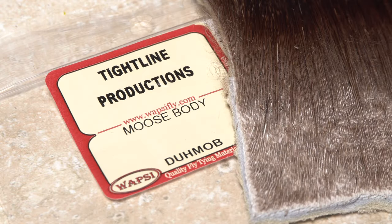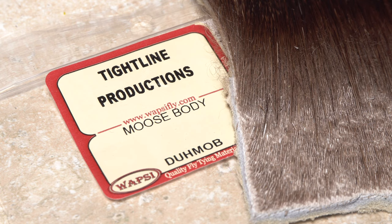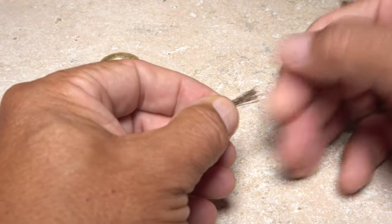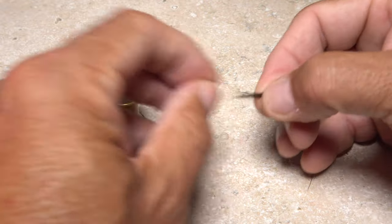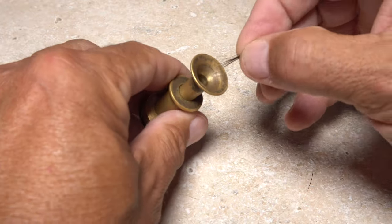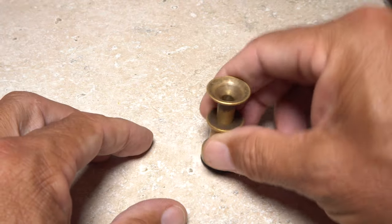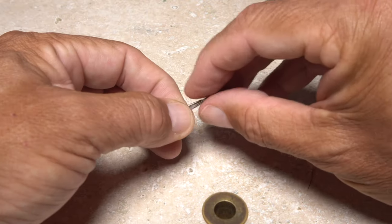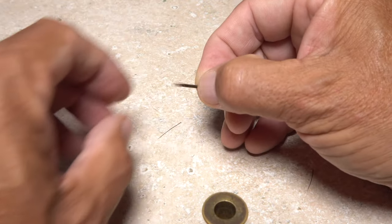Moose body hair is used to create a stiff, somewhat buoyant tail on the fly. Snip just a dozen or so hairs free from down close to the hide. Strip out the lower fluffy fibers and short hairs. Give the clump an ample stacking, then remove it from the stacker with the tips pointed to the rear of the fly.